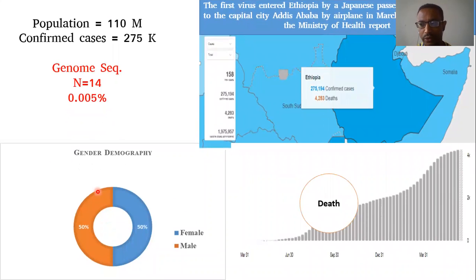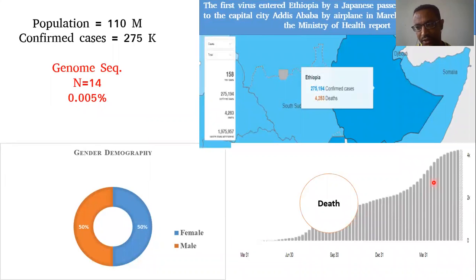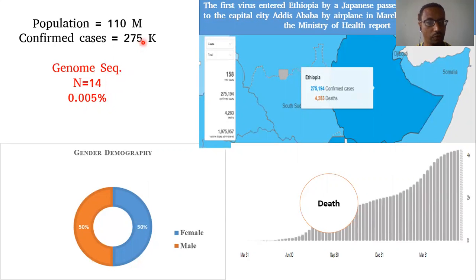When we come to Ethiopia, it is part of East Africa or the Horn of Africa, with almost 110 million population. When we see the history of coronavirus in Ethiopia, the first case was linked to a Japanese person flying from Japan. According to COVID-19 data, even as the number of cases increased day by day as shown on the graph, only 14 genome sequences had been submitted to the GISAID database — almost 0.00% of the genome data has been sequenced.